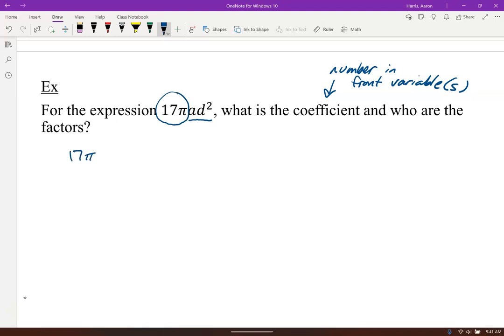17 pi is actually your coefficient. Remember pi is a number. So 17 being multiplied by pi, 17 pi is the coefficient.